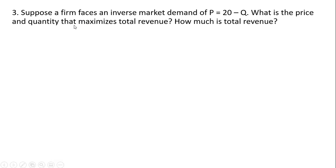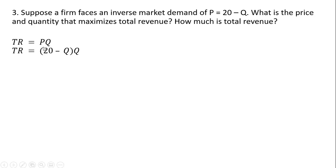Problem three, another variation: suppose a firm faces an inverse market demand of price equals 20 minus Q. What is the price and quantity that maximizes total revenue, and how much is this total revenue? As stated earlier, total revenue is the price of the unit times the quantity sold. So where we have price, we plug in 20 minus Q.